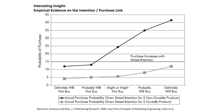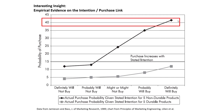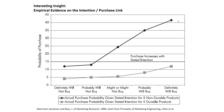Even then, when people said they definitely will buy a product, on average the purchase probability was only slightly over 40%. Even with these older results, there are two key insights to keep in mind. First, we should never treat people's stated purchase intentions as though they perfectly correlate to people's actual probability of purchase. Secondly, the strength of the relationship between stated purchase intention and purchase probability can vary greatly depending on the type of product.